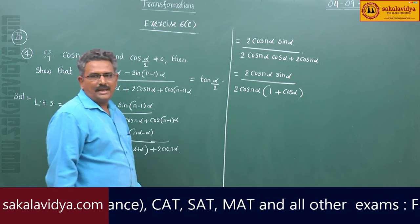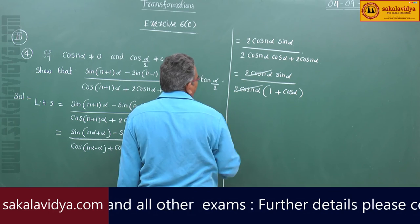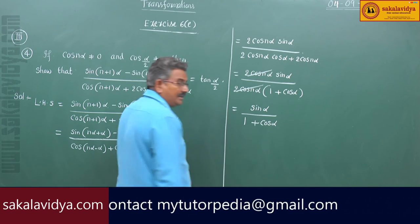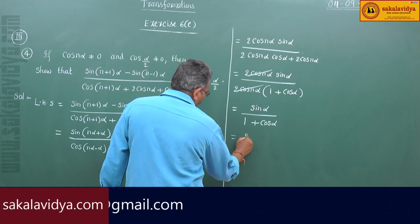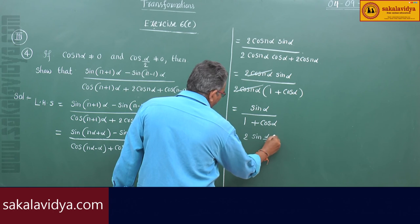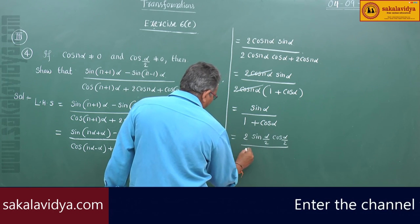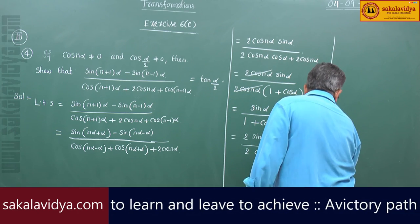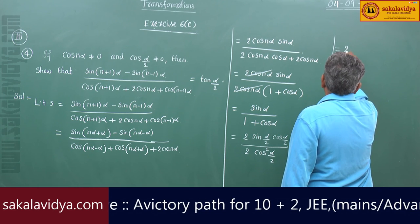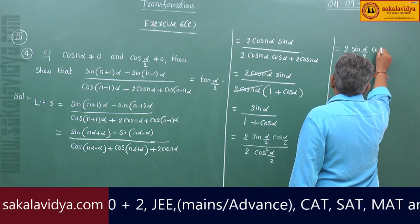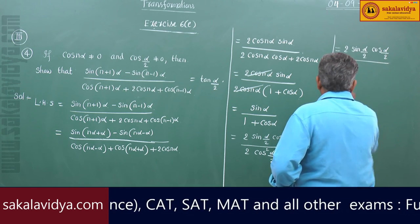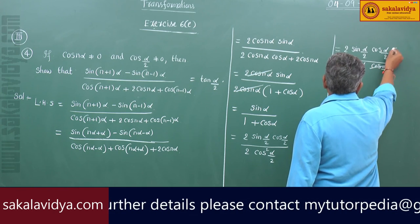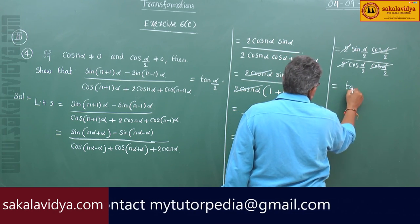The 2cos(nα) terms cancel, leaving sin(α) divided by 1 plus cos(α). Now sin(α) can be written as 2sin(α/2)cos(α/2), and 1 plus cos(α) equals 2cos²(α/2). So this becomes 2sin(α/2)cos(α/2) divided by 2cos²(α/2).